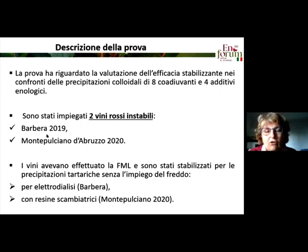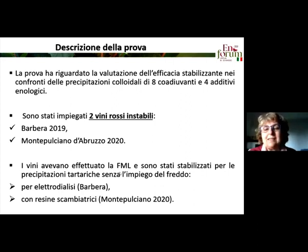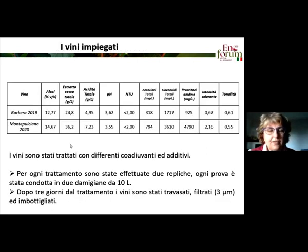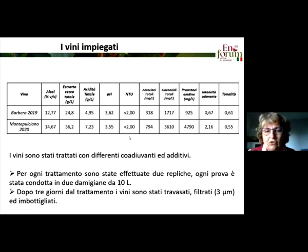To improve colloidal stability, you can use adjuvants to remove instability factors such as aggregated polyphenols and proteins, or add additives to manage the colloids in the wine. The test I'm going to describe is ongoing, so these are early results. We compared eight different adjuvants and four different wine additives to assess the stability of two unstable red wines. These wines had undergone malolactic fermentation and were stabilized for tartaric precipitations without cold technologies — using electrodialysis and ion-exchange resins for Barbera and Montepulciano d'Abruzzo respectively. The two wines were very different: Barbera had medium to low levels of anthocyanins and tannins, while Montepulciano was rich in anthocyanins and proanthocyanidins.